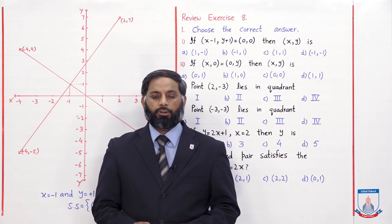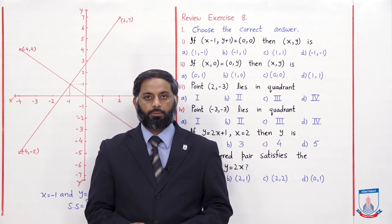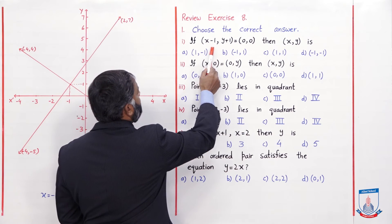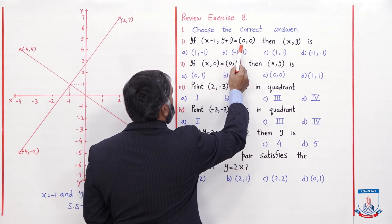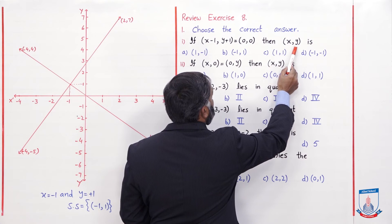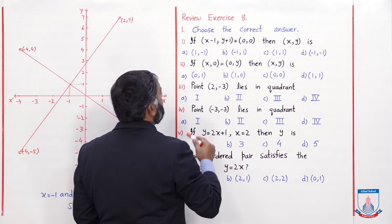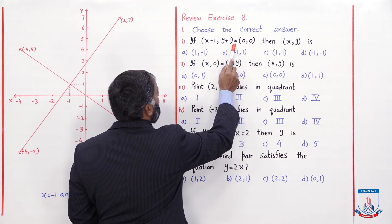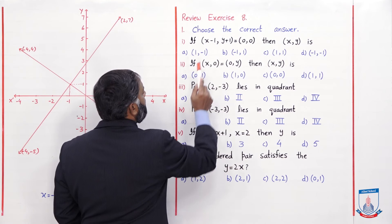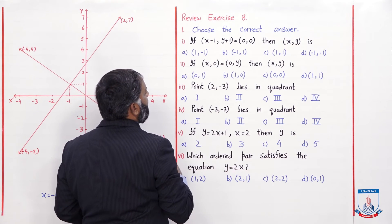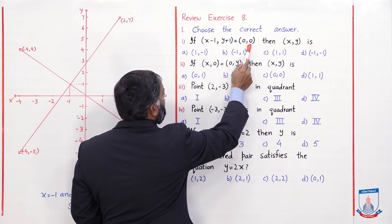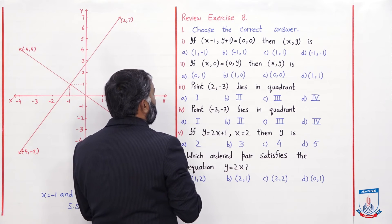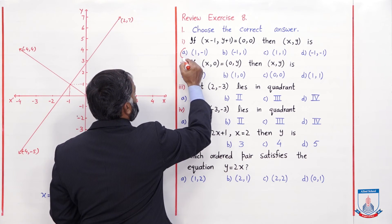अब review exercise 8 के multiple choice questions समझते हैं। First MCQ: if (x-1, y+1) = (0, 0), then x, y is? x coordinate को x coordinate के equal put करेंगे — x - 1 = 0, तो x = 1 आएगा। y coordinate को y coordinate के equal put करेंगे — y + 1 = 0, तो y = -1 आएगा। तो (1, -1) solution होगा — option A correct है।